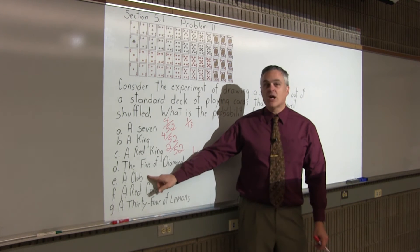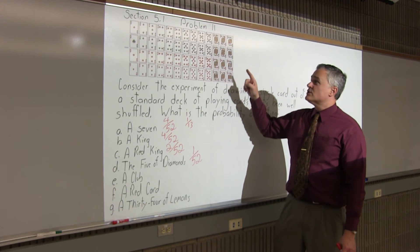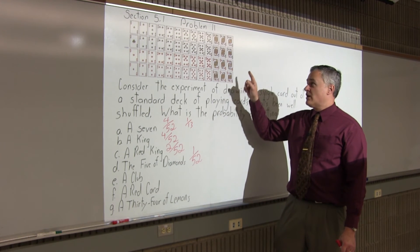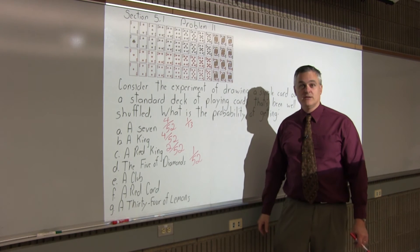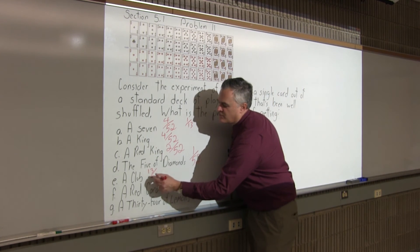What's the probability of getting a club? Well, the clubs are the cards in the top row. And if you count across the top, there are 13 clubs out of 52 cards.